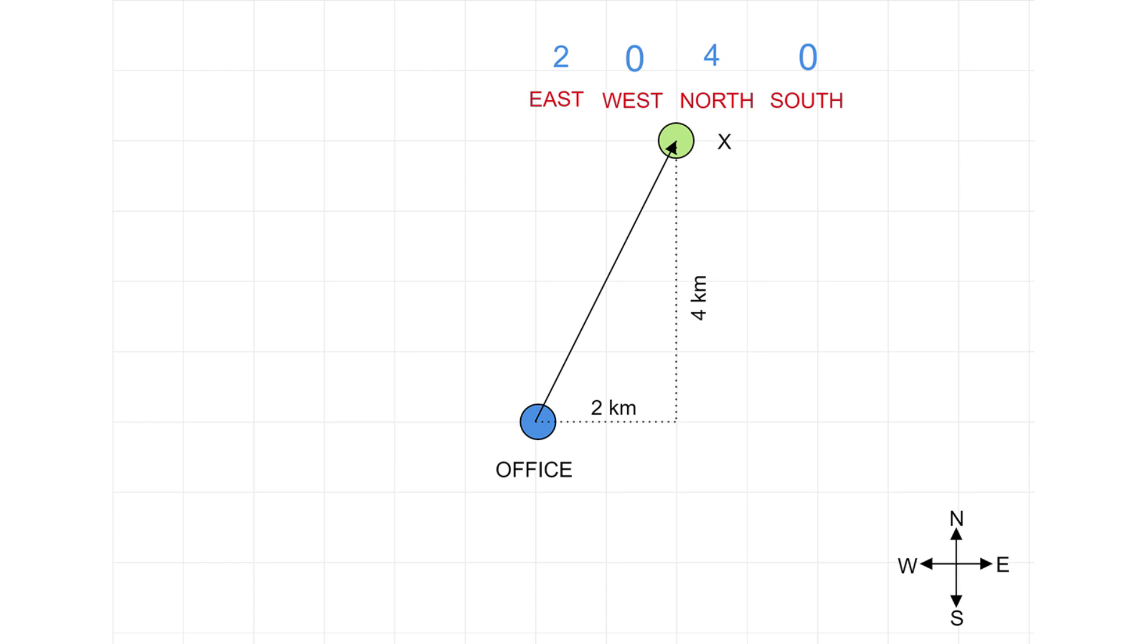There is already an understanding between these colleagues about how to interpret those numbers. B knows that these numbers correspond to the kilometer distance in east, west, north and south directions in that order.